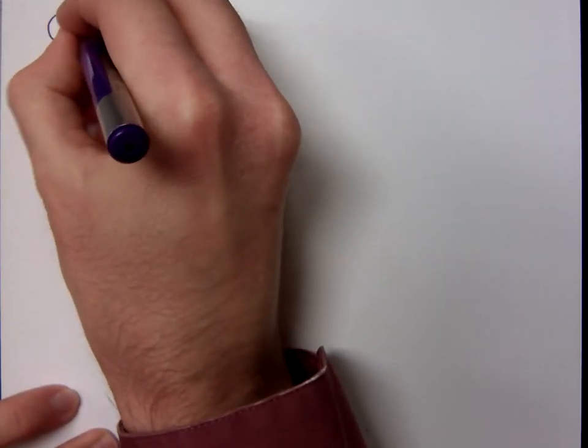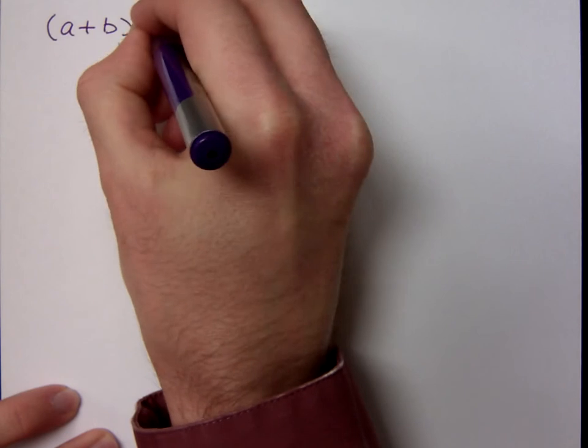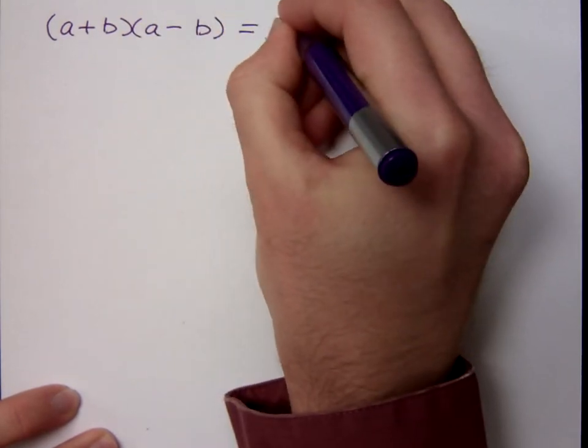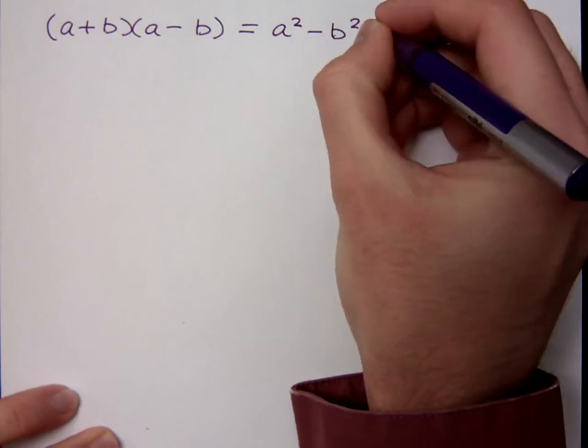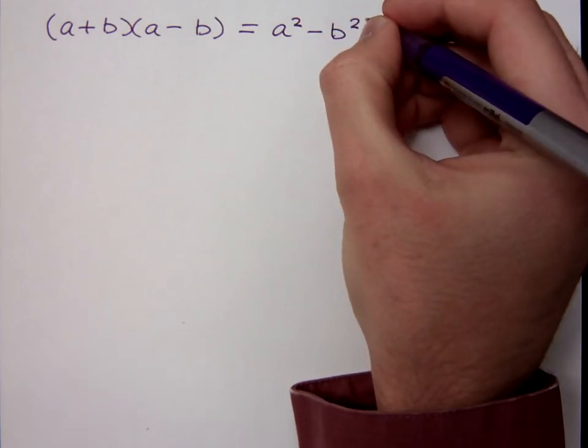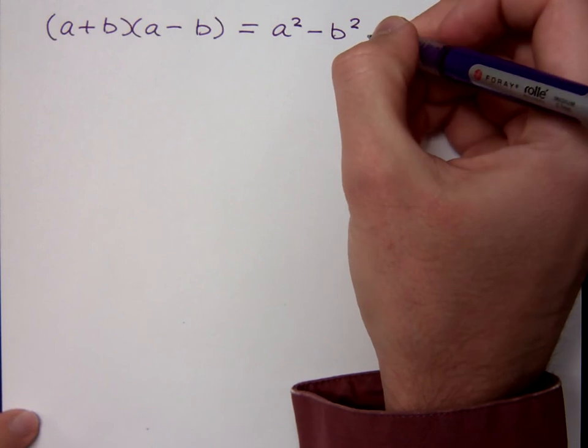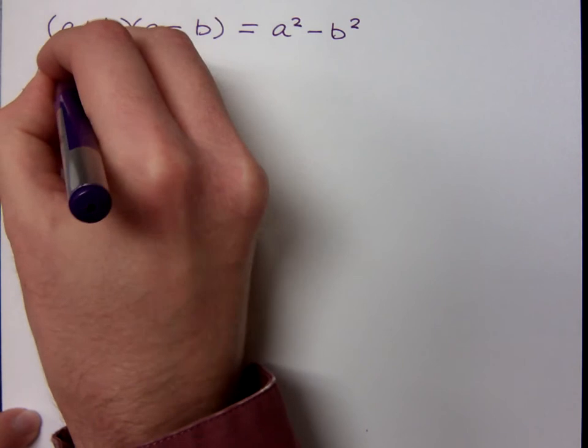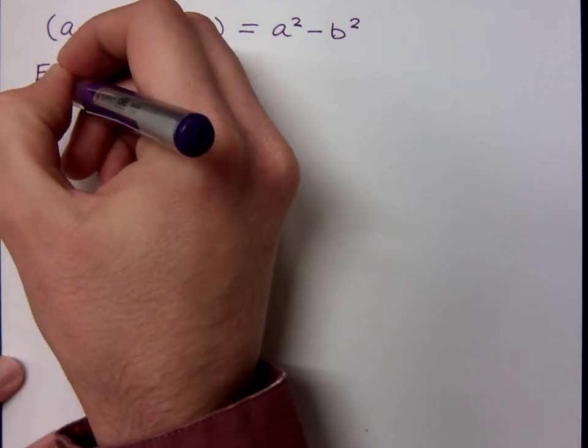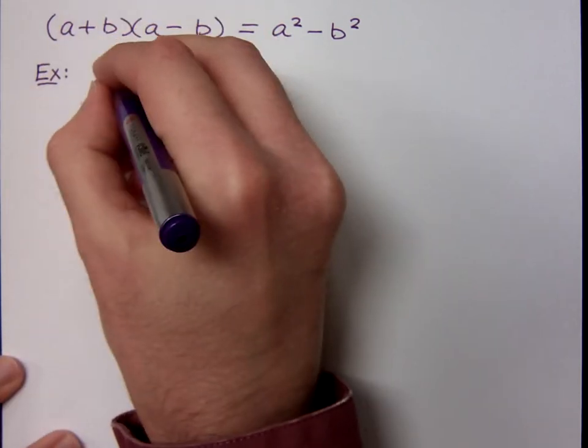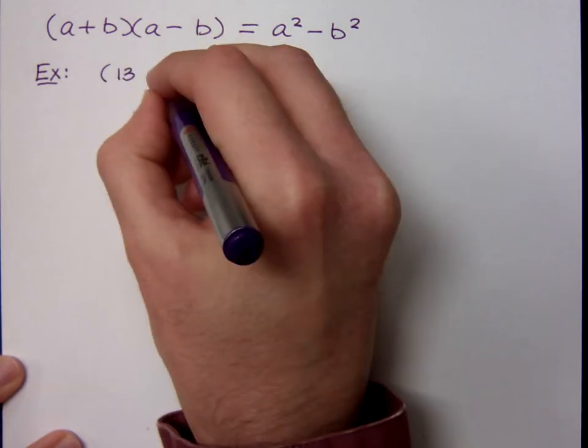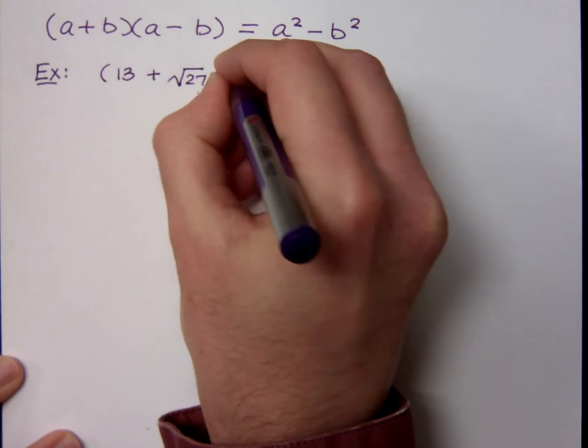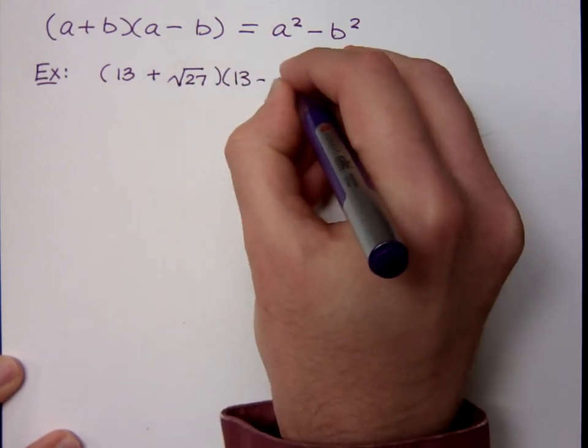Last time we had talked about multiplying conjugates, and that gave us the difference of squares, right? I don't remember how to do this one. What do you mean, this one? I knew it was the difference of squares. On the quiz, like the one that was on the quiz? Yeah, exactly. Well, what if I gave you this problem? 13 plus the square root of 27 times 13 minus the square root of 27.